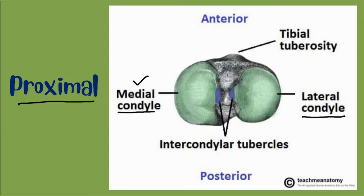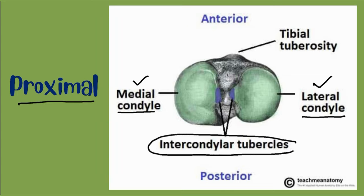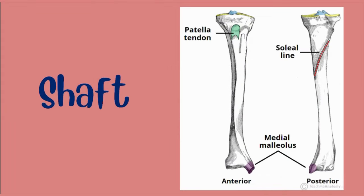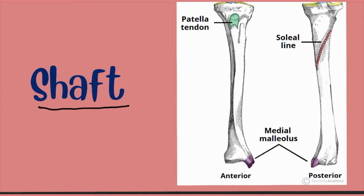The proximal tibia is widened by medial and lateral condyles. The tibial condyles articulate with the femoral condyles to form the key articulation of the knee joint. Located between the tibial condyles is a region called the intercondylar eminence, which projects upwards on either side as the medial and lateral intercondylar tubercles.